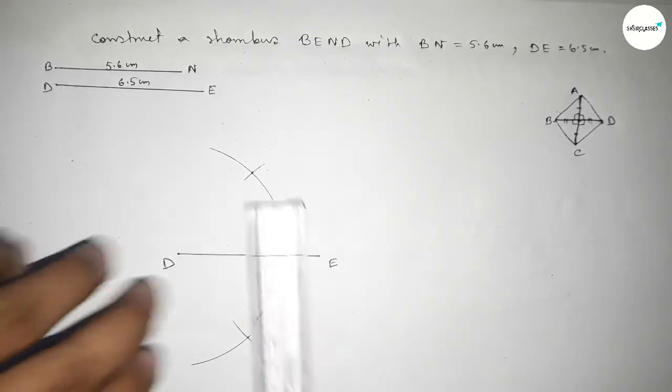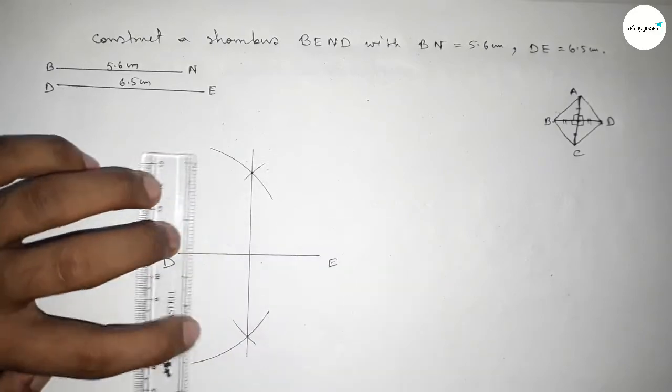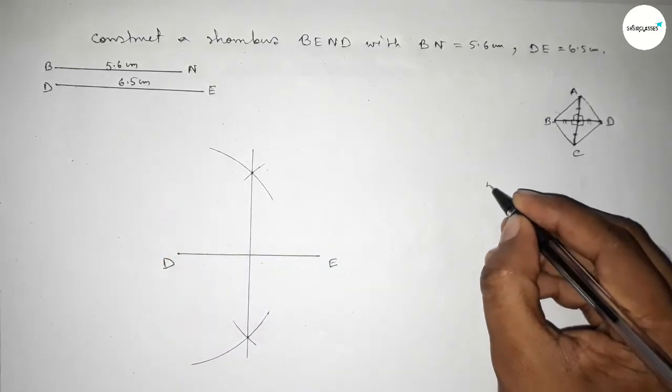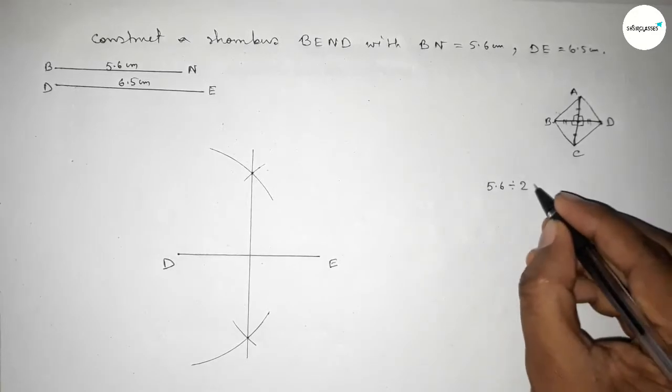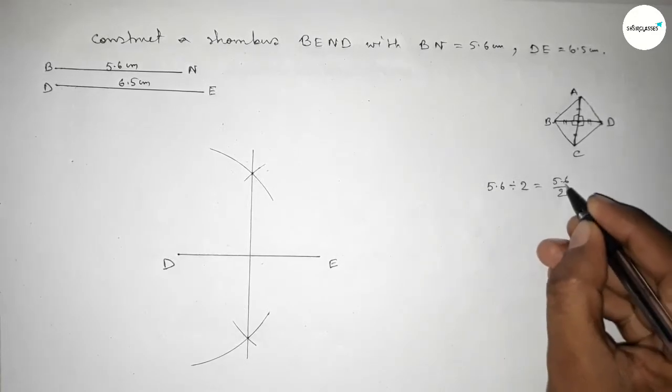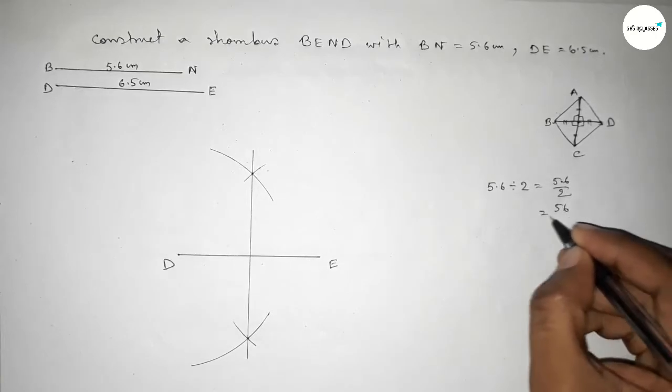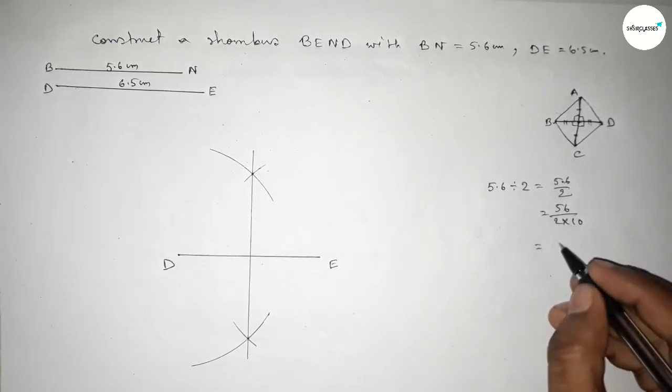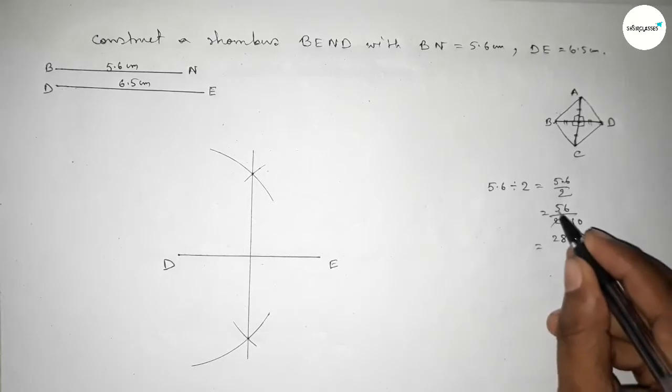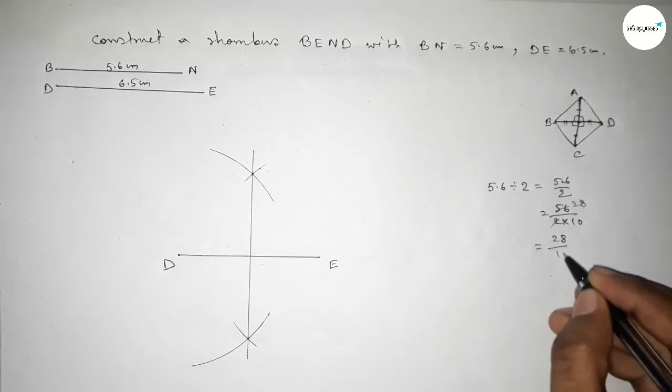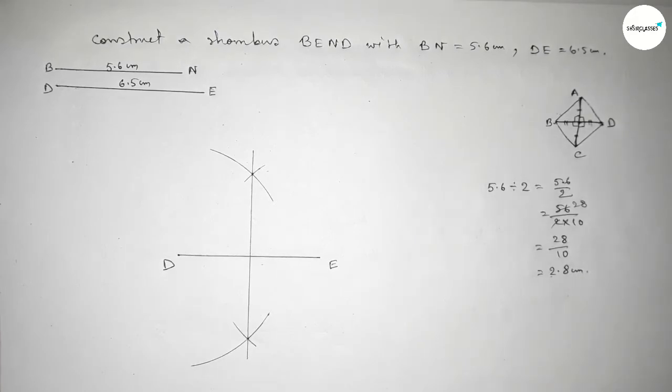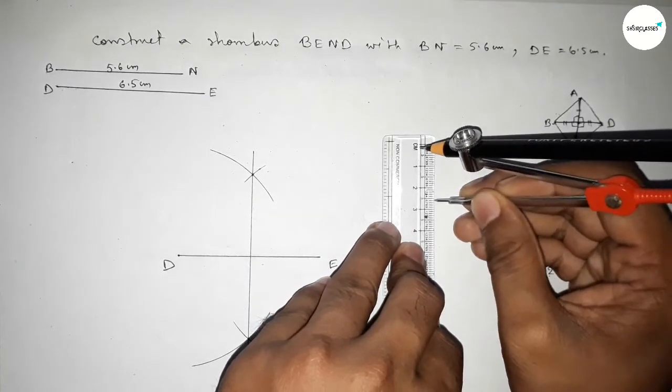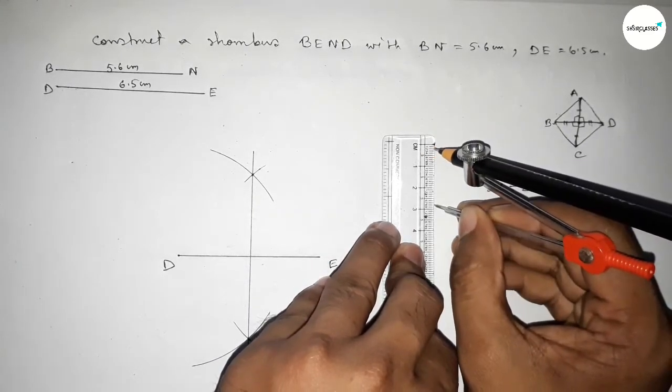Now we have to divide 5.6 by 2. Calculating this: if we remove the decimal, we get 56 divided by 2, which is 28, so this is 28 divided by 10, which equals 2.8 centimeters. Taking this length using a scale, this is 2.8 centimeters.